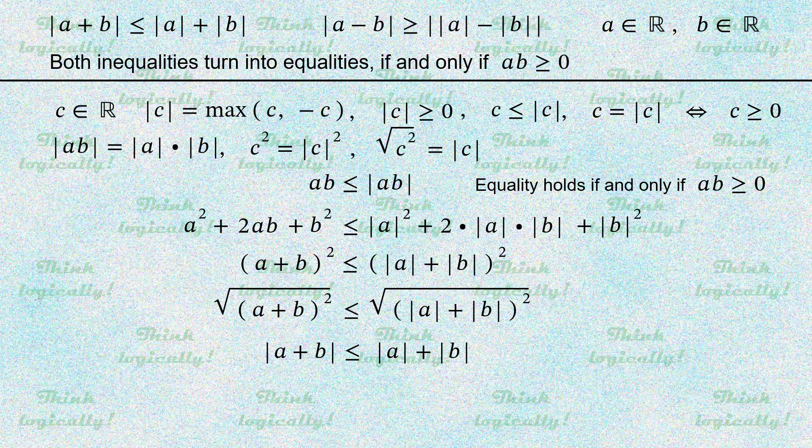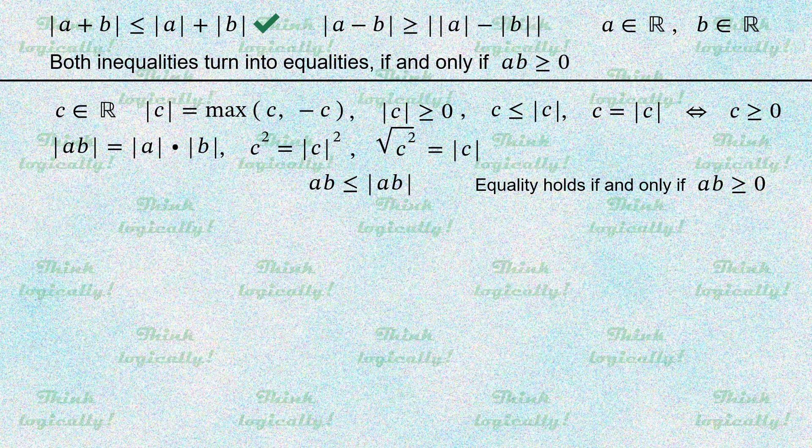And this happens if and only if a times b is non-negative. Now we can place a tick indicating that the first triangle inequality has been proven and move on to proving the second inequality.